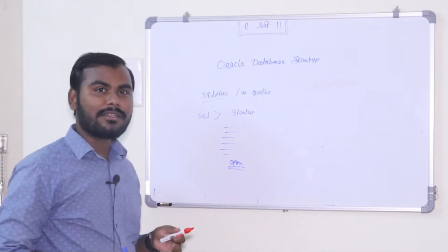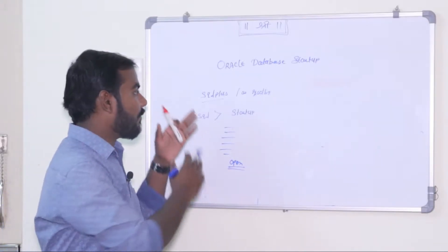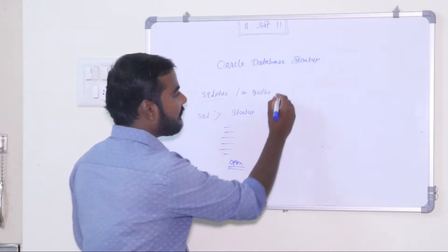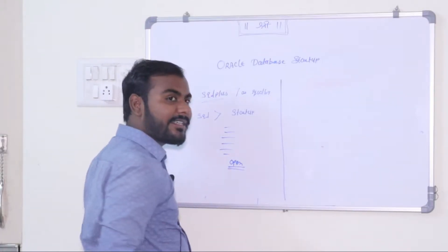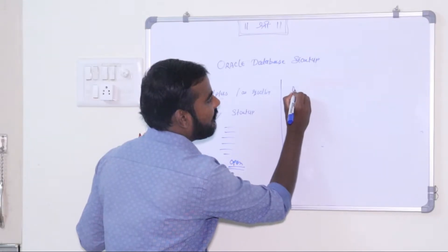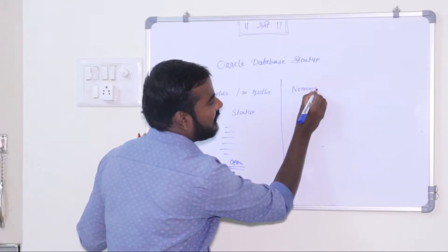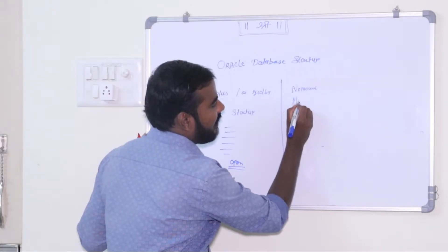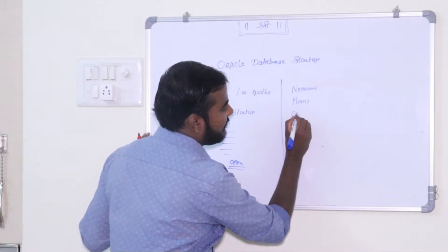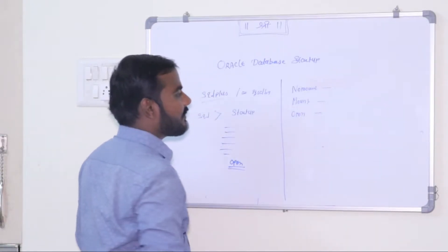Now let me explain what is exactly happening inside. We can start the database in three stages. The first stage is No Mount, the second stage is Mount, and the third and last stage is Open. These are the three stages through which the database will get started.